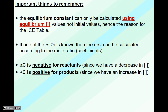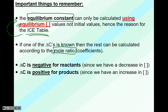Some important things to remember: the equilibrium constant can only be calculated using equilibrium concentration values, not initial values. Anytime you're using the equilibrium constant equation, you're only looking at concentrations at equilibrium — not initial values and not the change in concentration. That's why we have to use an ICE table along with the equilibrium constant.